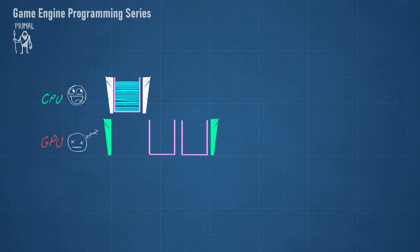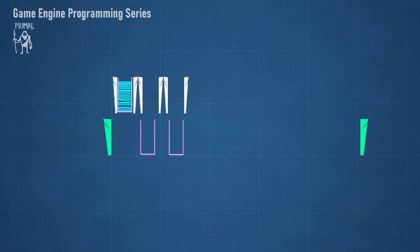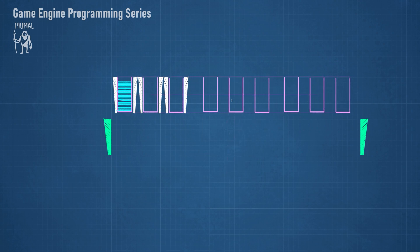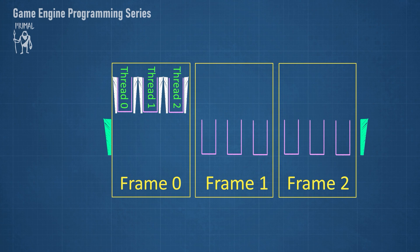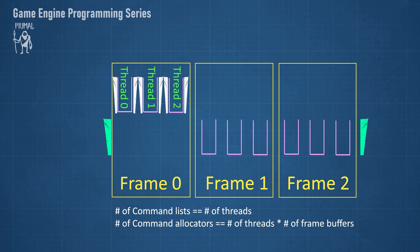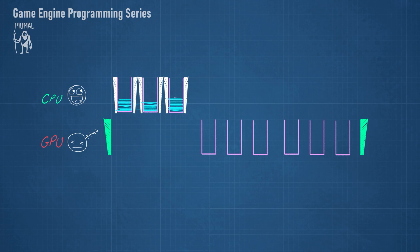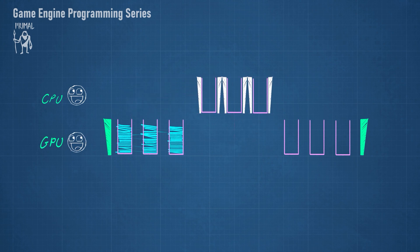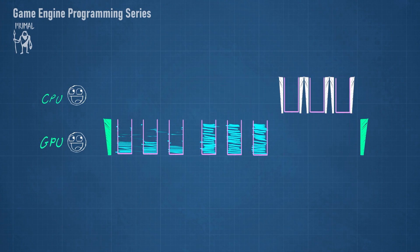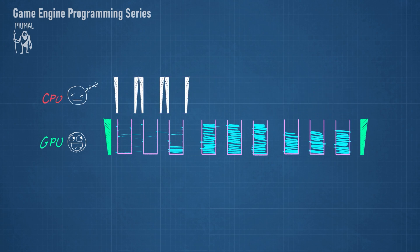Realistically though, often either the CPU or the GPU has to wait for the other to finish work. In case the recording on the CPU is the bottleneck, there is one more option for improvement. We can use multiple command lists to record commands in parallel using multiple threads. In this case, we need as many command lists as the number of threads, as well as the same number of command allocators per frame buffer. For our implementation, I'll start with three frame buffers using a single thread, and in the future we can decide whether a multi-threaded version is beneficial.